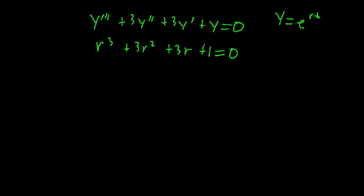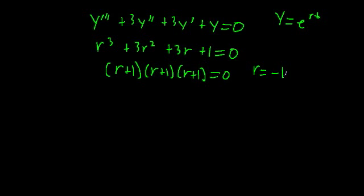And if you were to toy around with this, you'll find that it can be factored with the form r plus one times r plus one times r plus one is equal to zero. Which means our roots are r is equal to negative one, and that is repeated three times. Or you could just say the root is r is equal to negative one with multiplicity three.